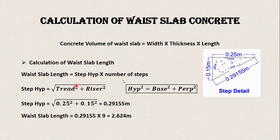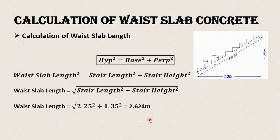To find the waste slab length, we use the Pythagorean theorem. Step height equals the square root of (tread squared plus riser squared), which is the square root of (0.25² + 0.15²), giving a step height of 0.29 meter. The waist slab length becomes step height multiplied by the number of steps, which equals 2.624 meter.